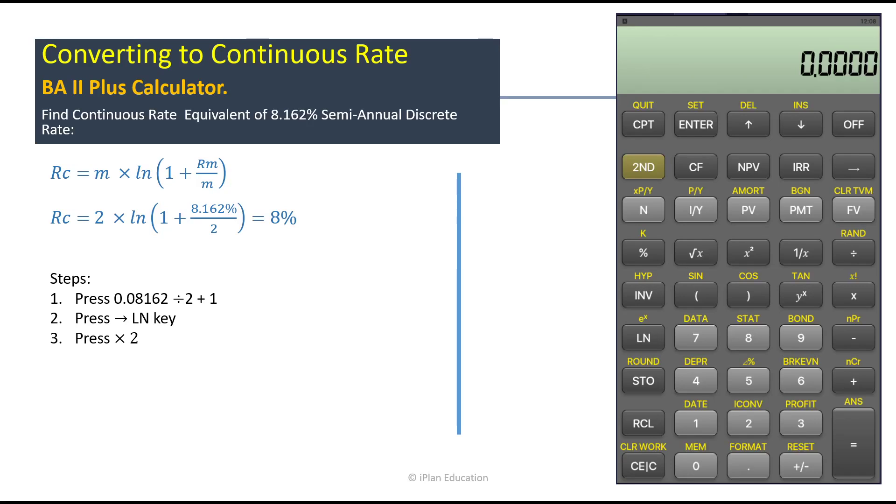Hello friends, I'm Praveen Khetan and in today's video we will learn about how to convert the continuous rate using discrete rate using financial calculator BA II Plus. So we have to find the continuous rate equivalent of 8.162% semi-annual discrete rate.